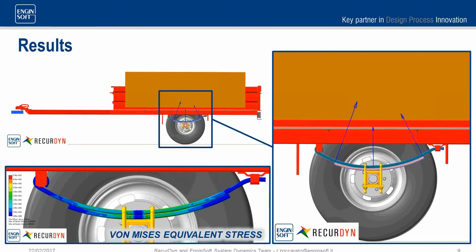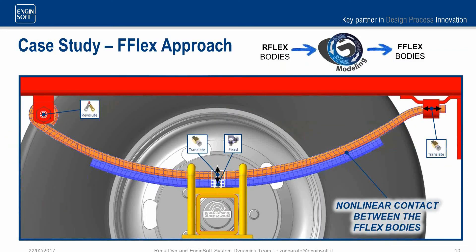I also tested the full flex approach on the same system. Using the G-Modeling tool, I converted the RFlex bodies into full flex bodies — real finite element flexible bodies. This time there is no linear limitation, so I can apply a nonlinear contact between the two parts: a single contact linking the entire shared faces of the two bodies. I also removed the fixed joint supporting the upper part of the leaf spring and instead applied a translational joint, allowing the upper part to translate vertically and press on the lower part.